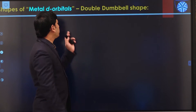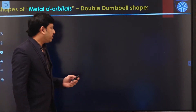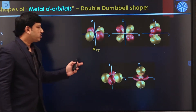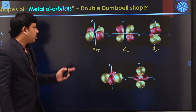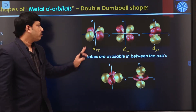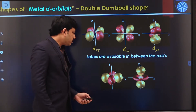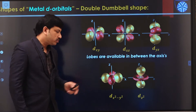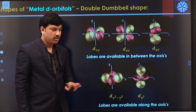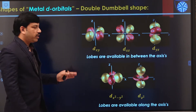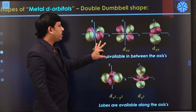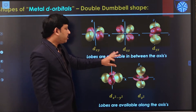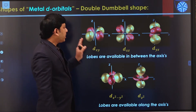Last session we discussed the various shapes of the five d orbitals. Among these five different d orbitals, the first is dxy, second is dxz, and third is dyz. In all these cases, the lobes are available in between the coordinating axes x, y, z. The other two d orbitals are dx²-y² and dz², and in these two cases the lobes are available along the coordinating axes. These are the shapes of all five d orbitals, and now these d orbitals interact with approaching ligands in the case of octahedral metal geometry.